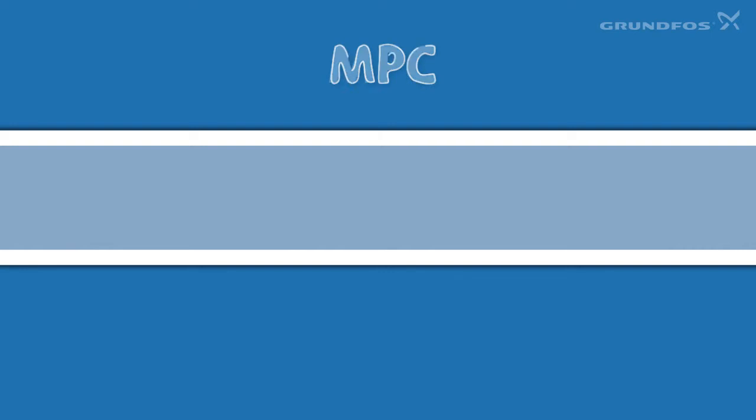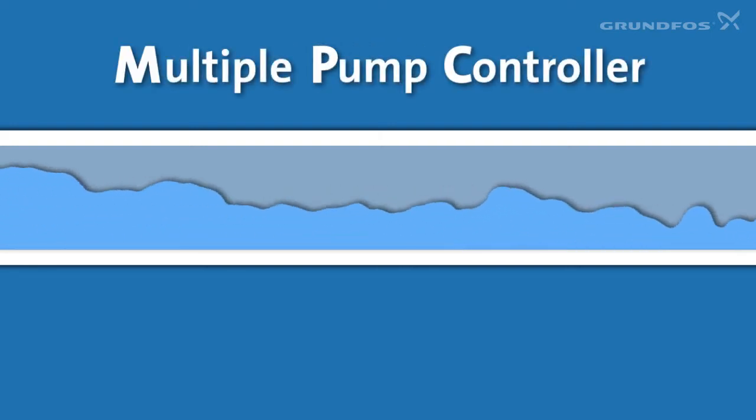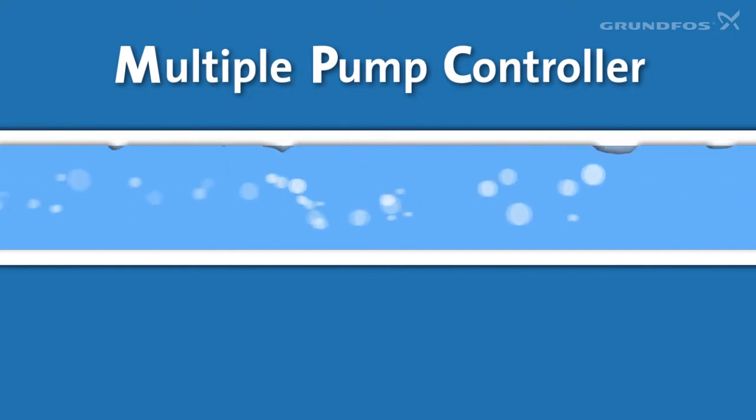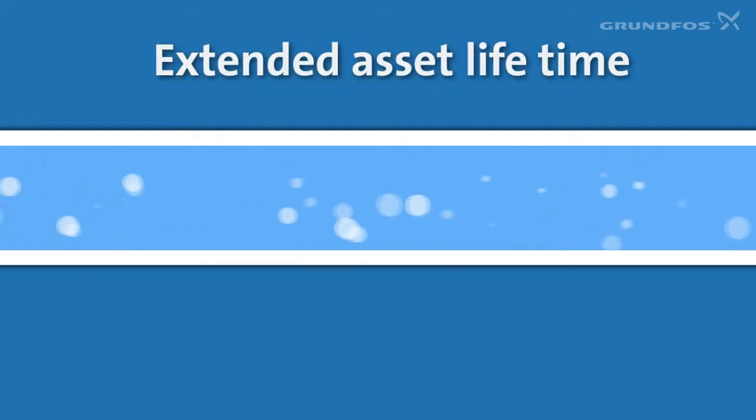Demand-driven distribution also reduces water hammer in other ways, for example by the soft build-up function. If pressure drops in your system during a pump stop, the MPC unit will slowly rebuild the pressure. In fact, the system fills up the pipes before it builds pressure. This is much gentler on the pipes, so you achieve fewer pipe bursts, reduced repair costs, and extended asset lifetime.